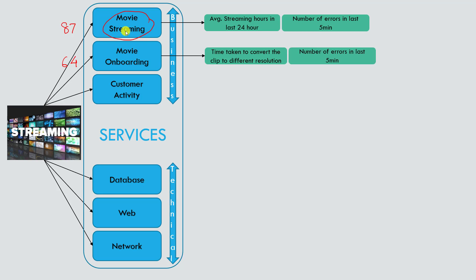For the movie onboarding service, KPIs could include the time taken to convert a clip to different resolutions like 1080p or 720p, or the number of errors during conversion. This is also a classic scenario where you can break the movie onboarding service into sub-services — one for 1080p, one for 720p, one for 240p — and track conversion time and errors for each. This introduces the concept of a service being dependent on another service.